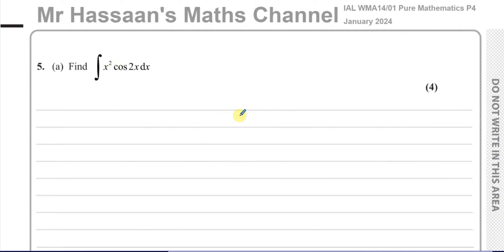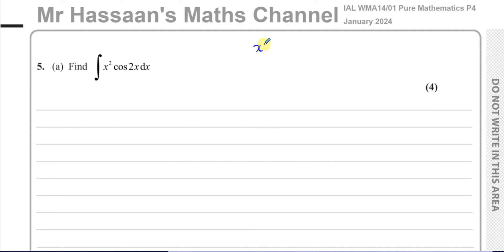Using integration by parts here, I'm going to use the DI method, and then I'll show you the traditional UV kind of method. Let me start with the DI method. For this type of question, you've got to look at the two functions you've got — you've got x squared and you've got cosine of 2x.